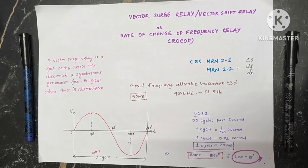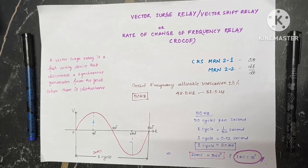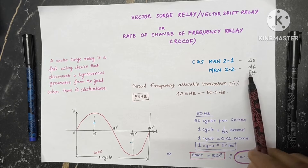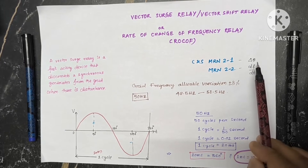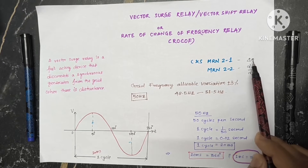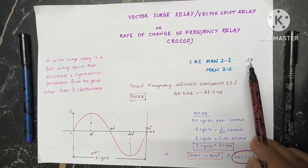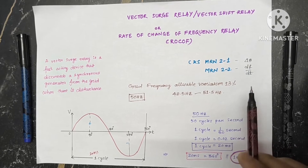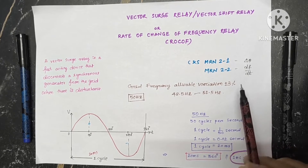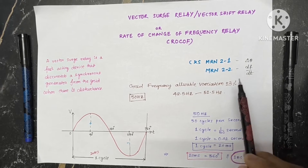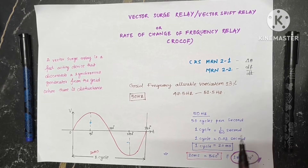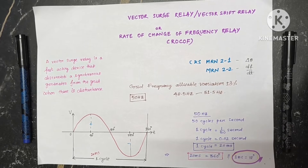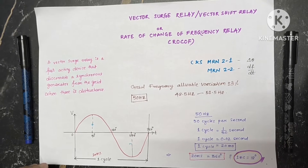We are using CNS make MRN 2-1 and MRN 2-2. MRN 2-1 is the vector shift relay — it utilizes the vector shift angle or angular deviation. MRN 2-2 has the rate of change of frequency, or DF/DT functionality. 50 Hz frequency means 50 cycles per second.